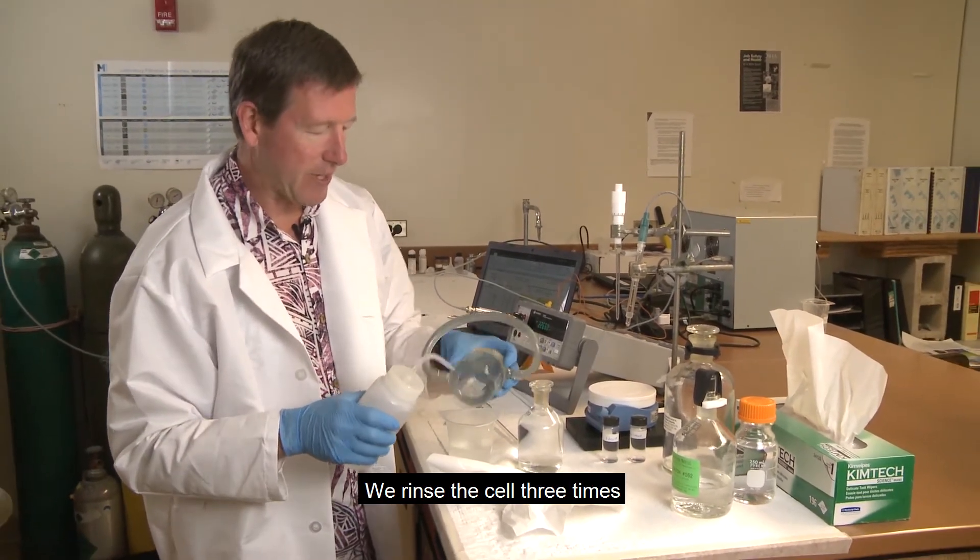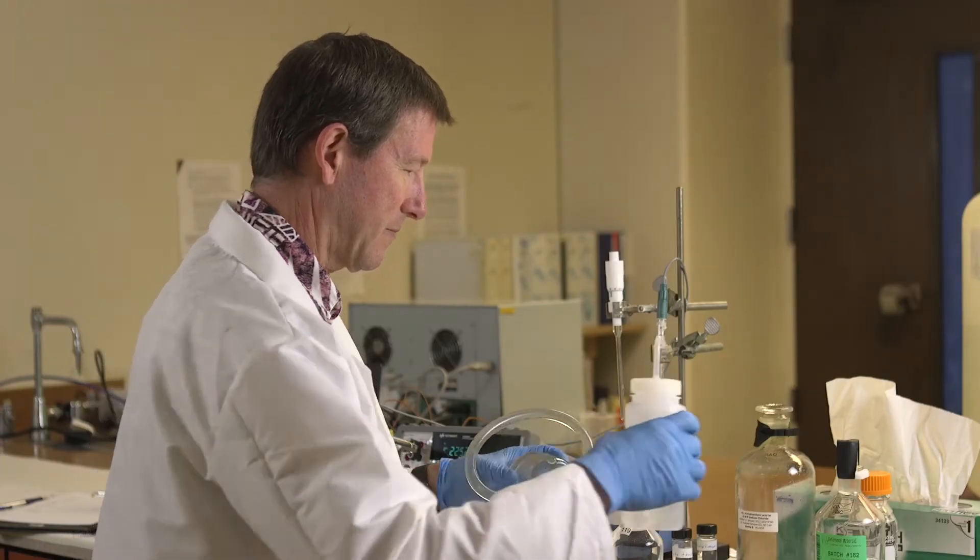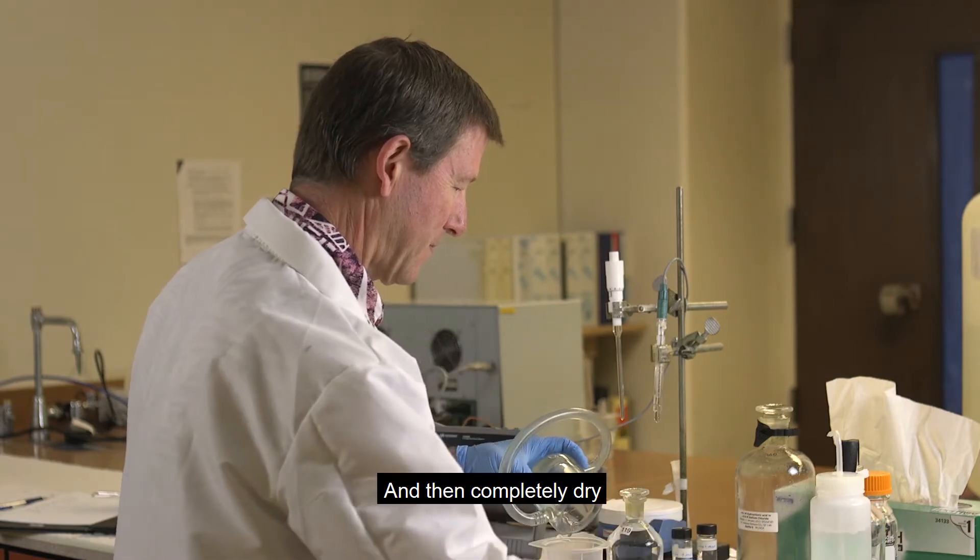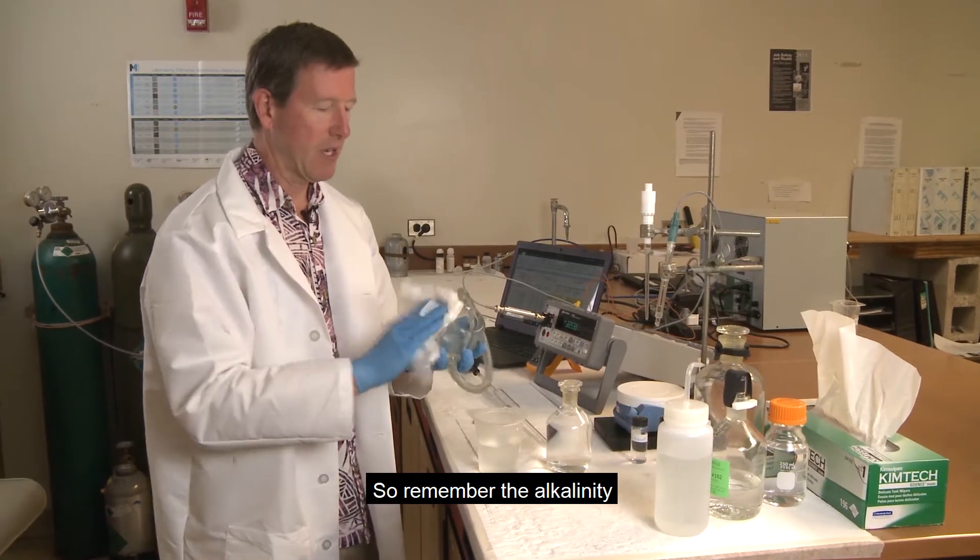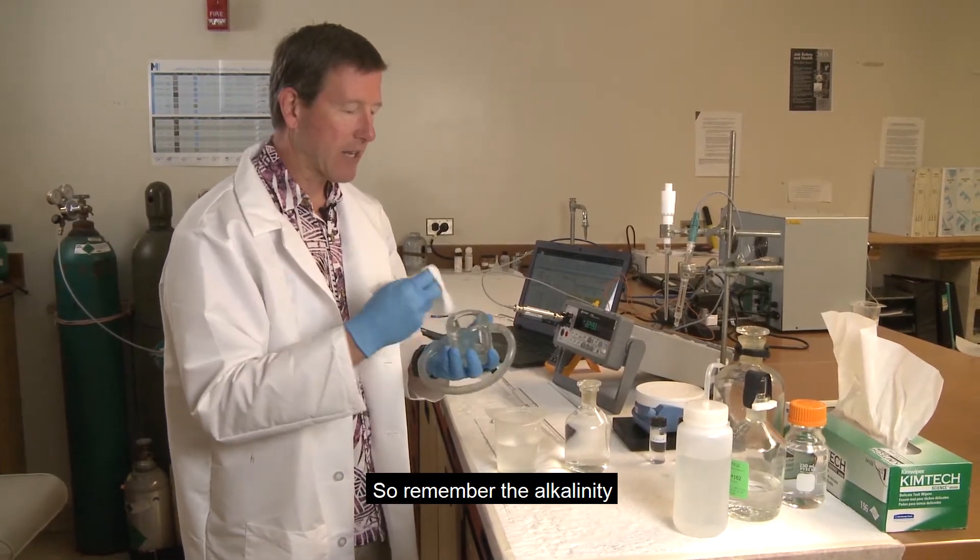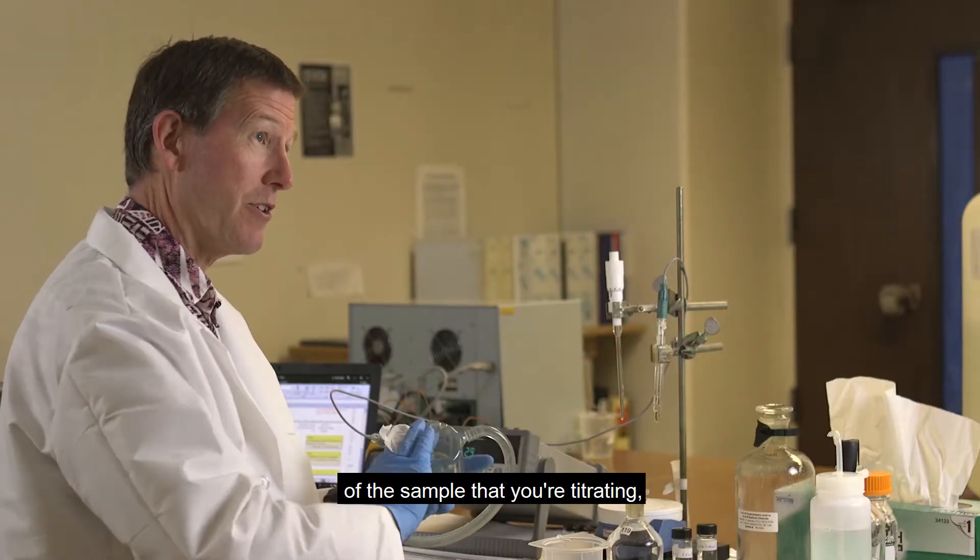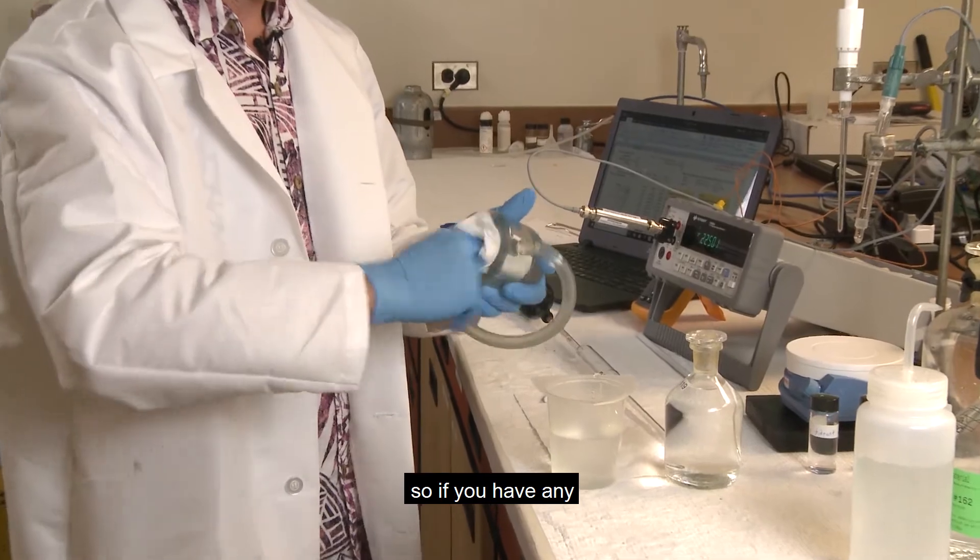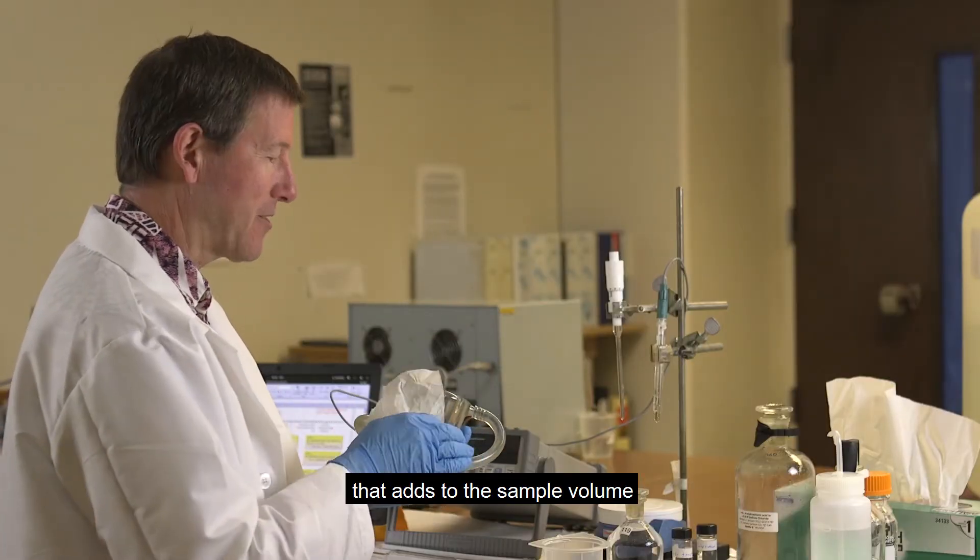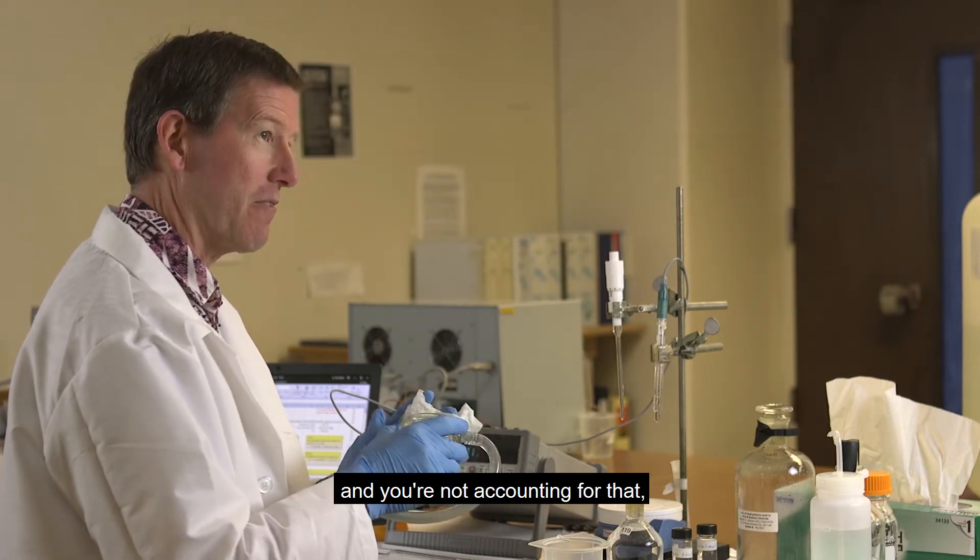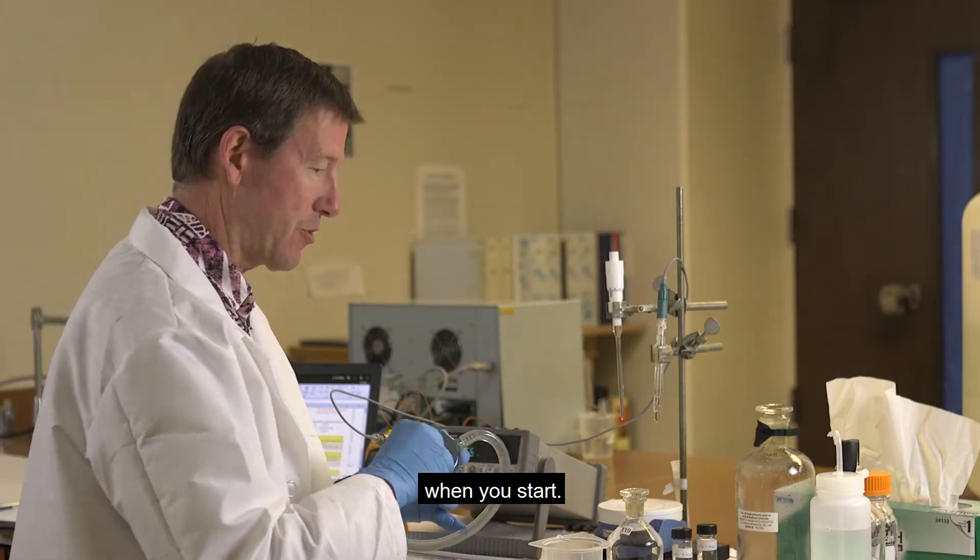We rinse the cell three times with your distilled water and then completely dry the sample, dry the container. Remember the alkalinity is a function of the volume of the sample that you're titrating. So if you have any water in the titration cell, that adds to the sample volume and you're not accounting for that. So you want the titration cell to be completely dry when you start.